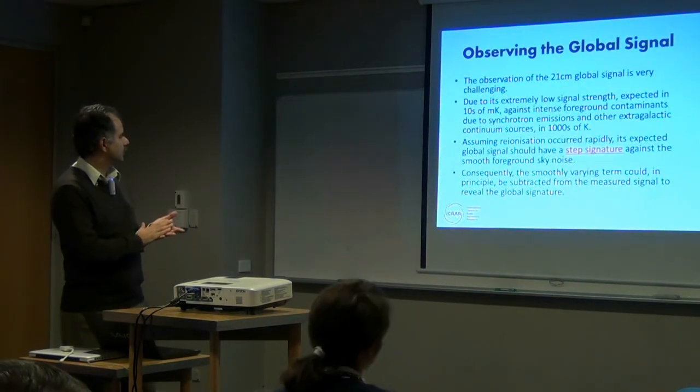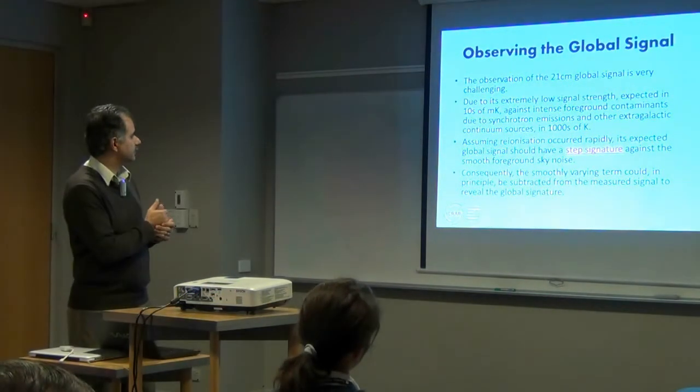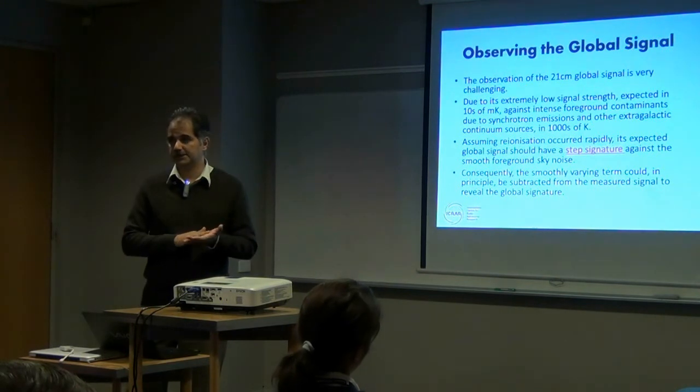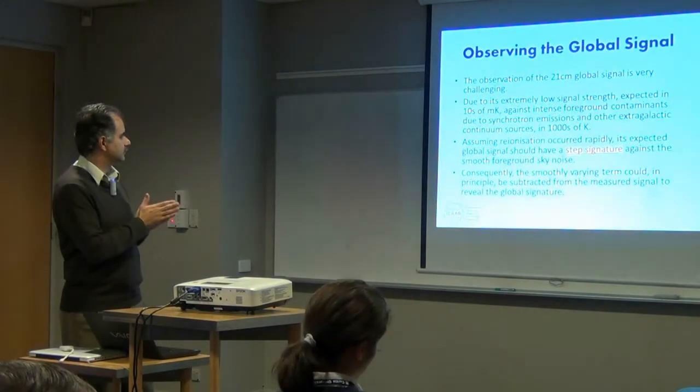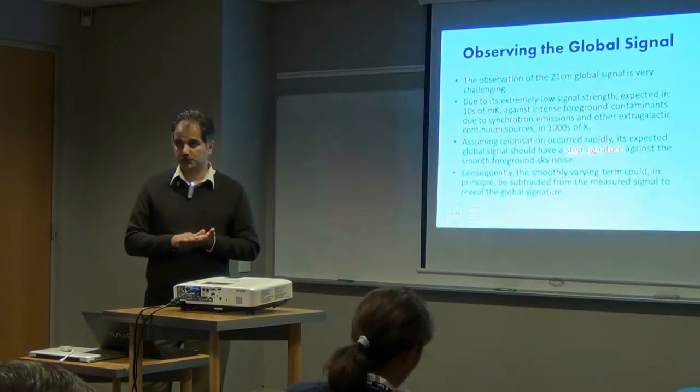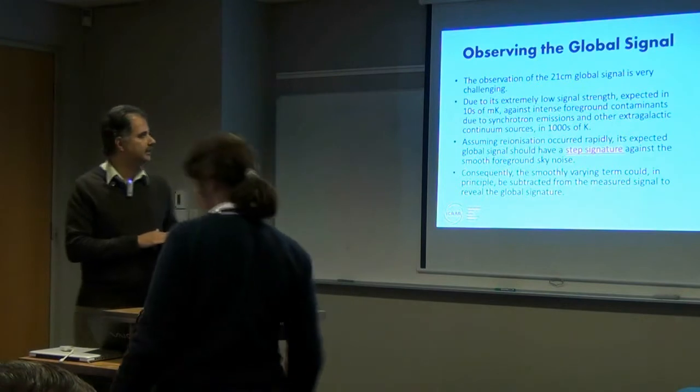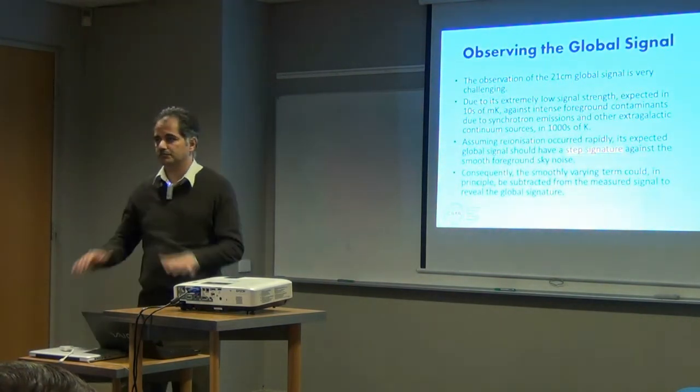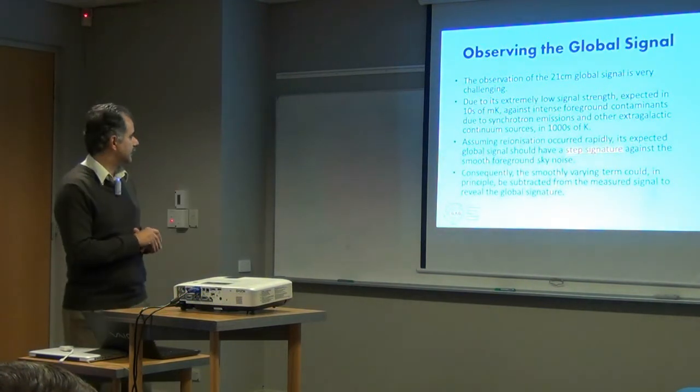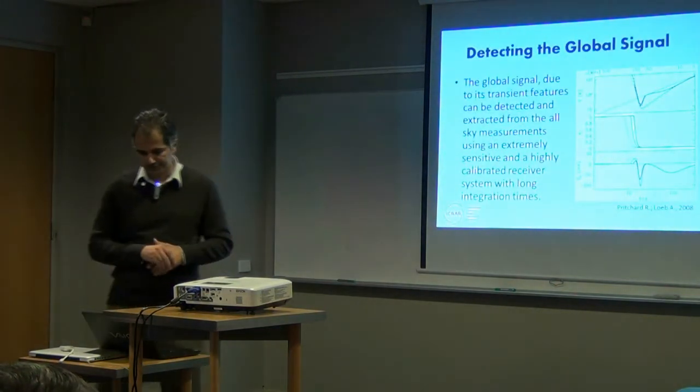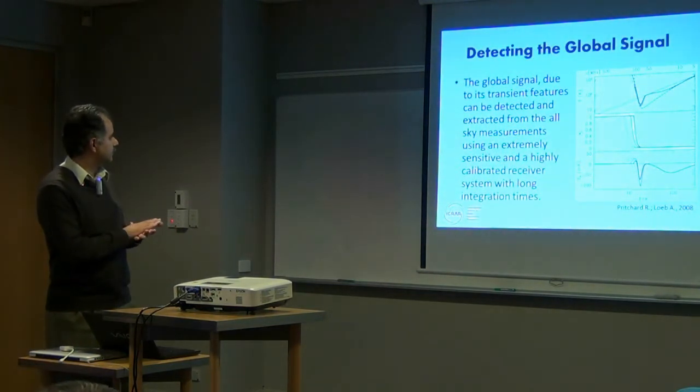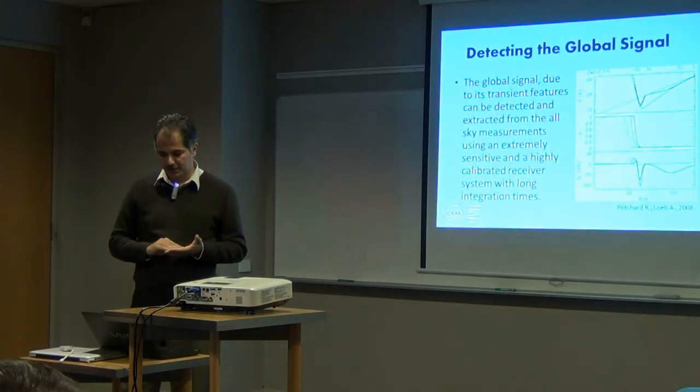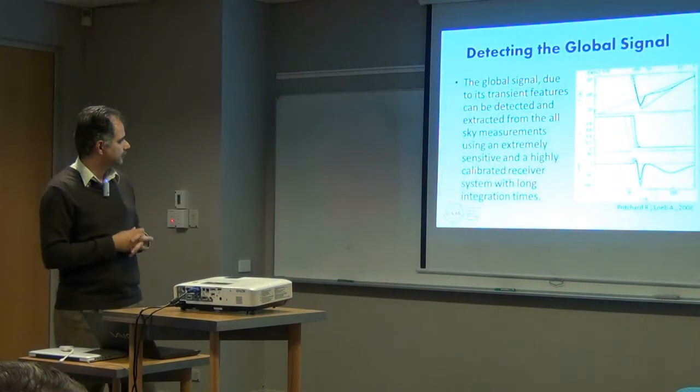The observation of this signal is quite challenging and it's due to its very small value in tens of millikelvin against the foreground contaminants where we will have the sky noise of thousands of kelvin and more. But assuming that the re-ionization would occur rapidly we expect that the global signal would have a step signature against the varying sky background noise. So in detecting that global signal we could extract that hopefully by using a very sensitive and highly calibrated receiver with long integration times.